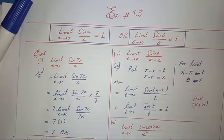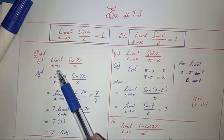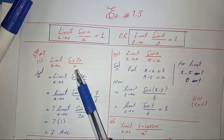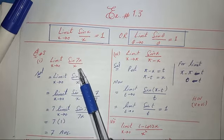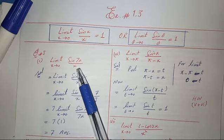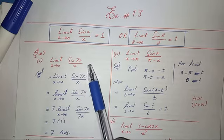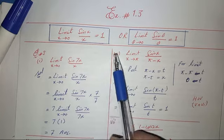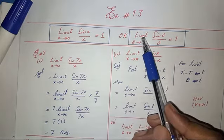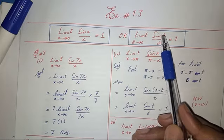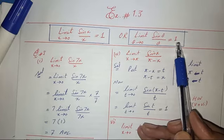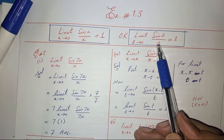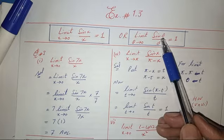First part of question number 3: evaluate the limit as x tends to 0 of sine 7x over x. For this question, we use the standard result: limit as x tends to 0 of sine theta over theta is equal to 1. The angle in sine and the denominator must be equal for this formula to apply.